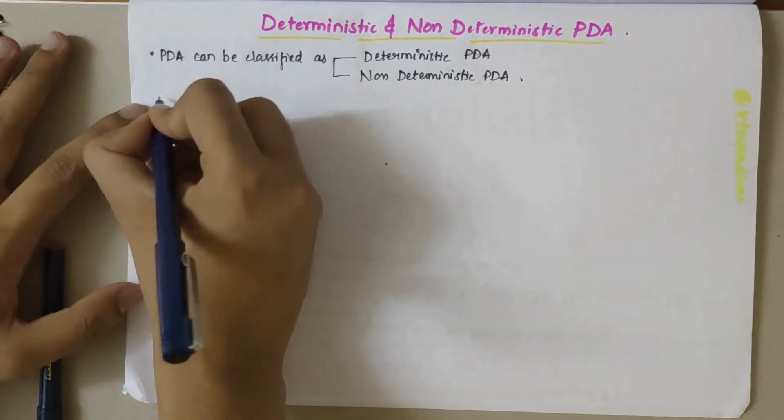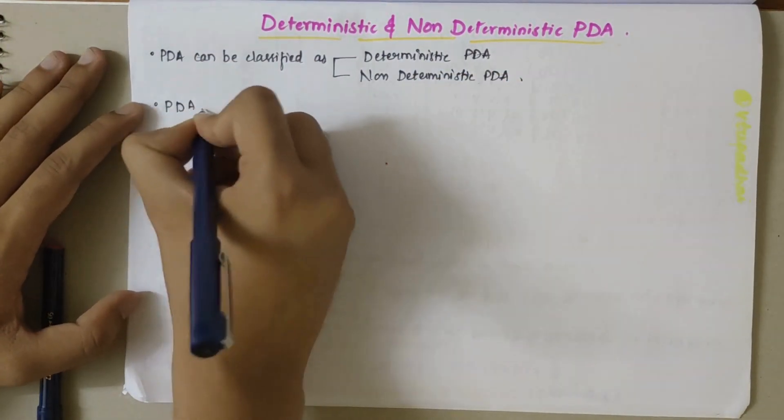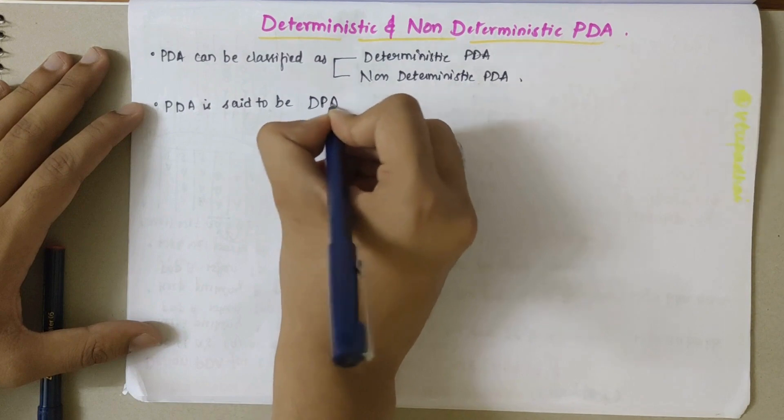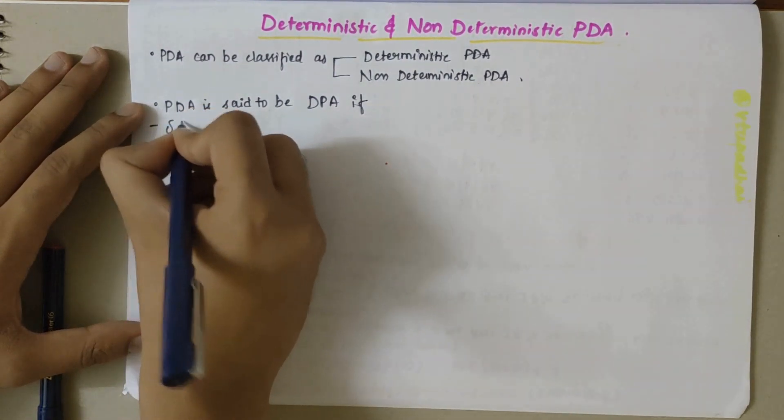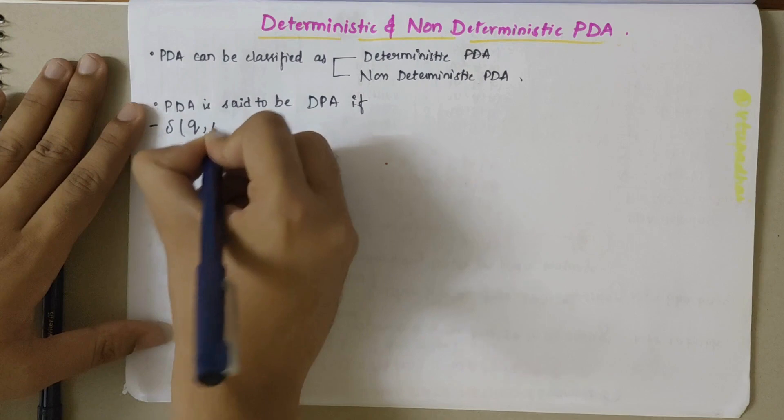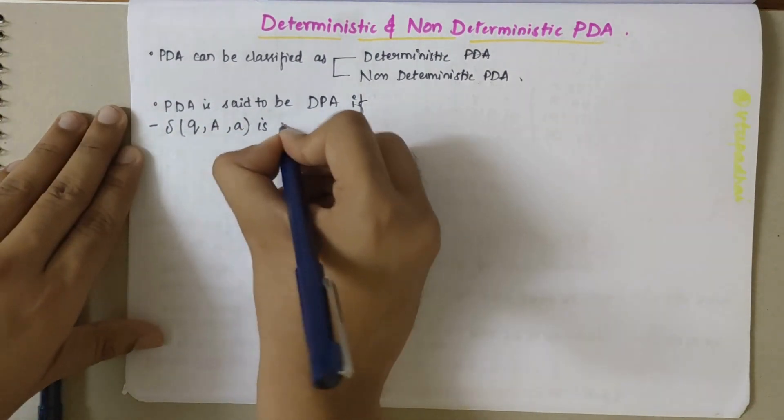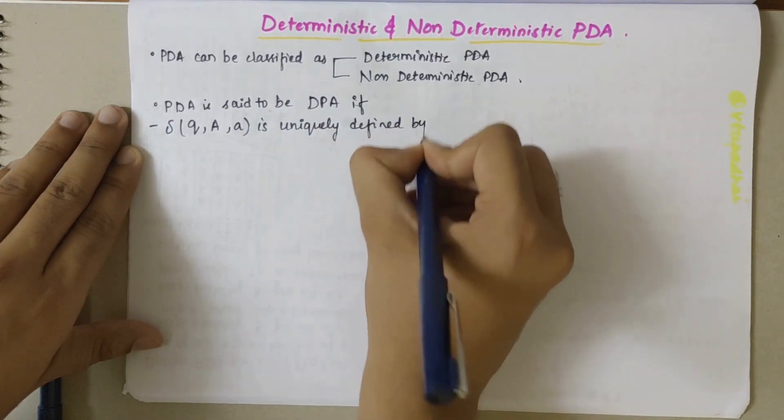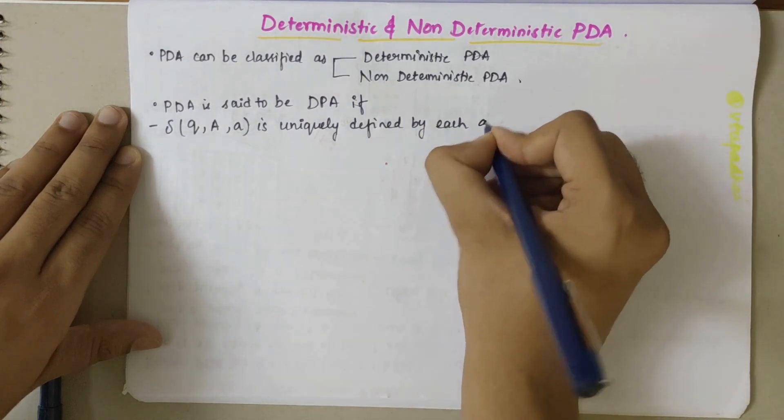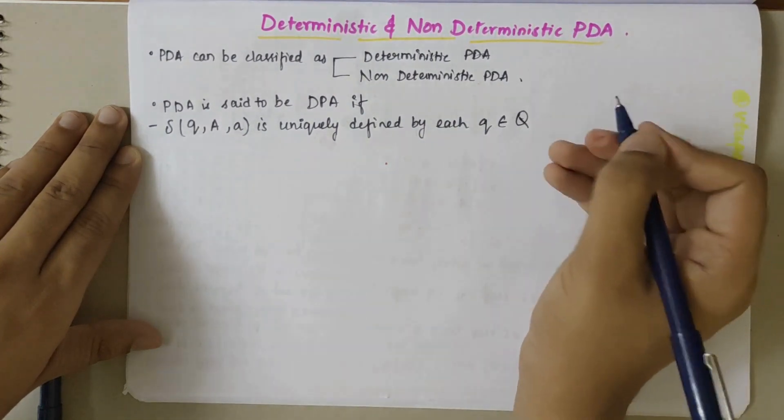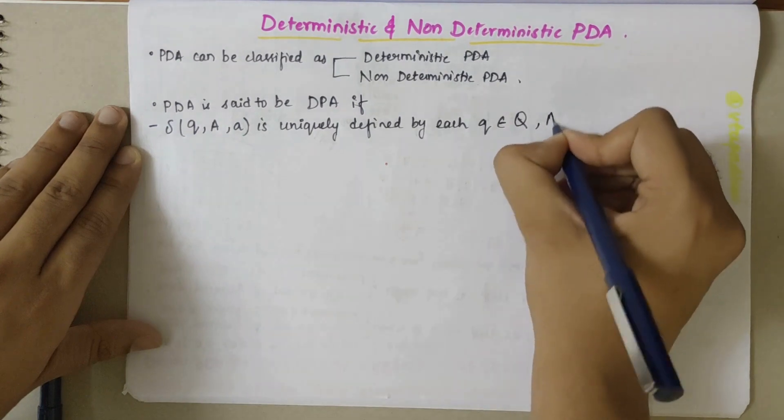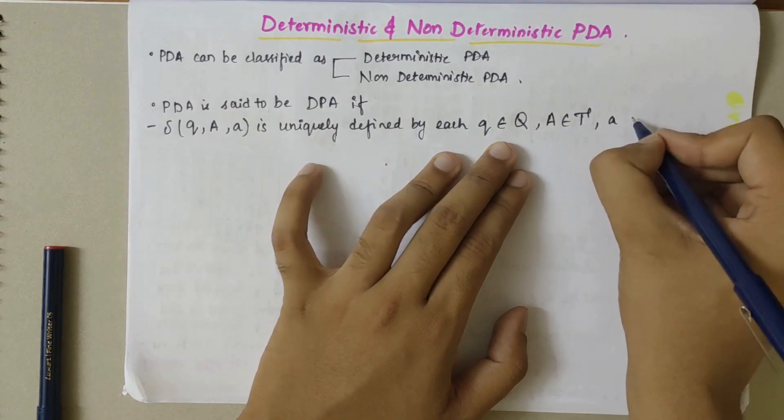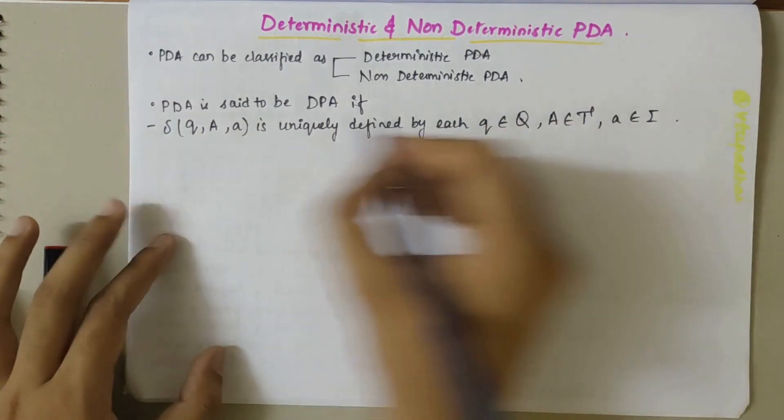A PDA is said to be deterministic PDA if transition of Q, A, and a is uniquely defined by each state which belongs to Q, and A should belong to Γ and the small a should be an alphabet.